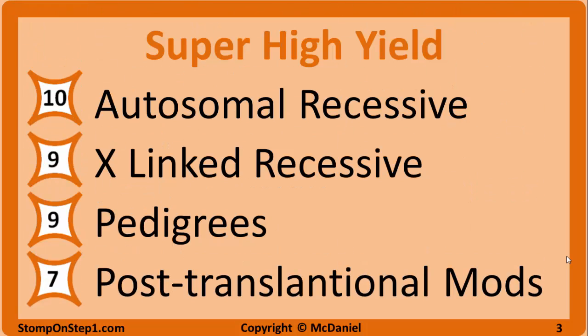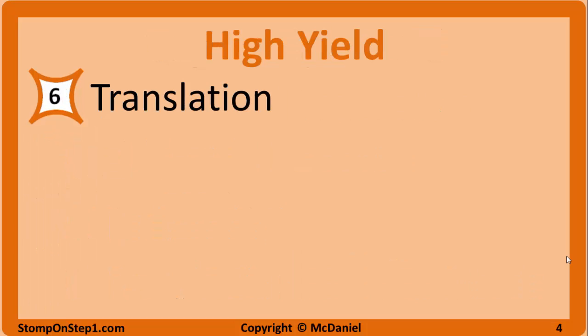With a high yield rating of 7, we have post-translational modifications. You want to know the basics of what a poly-A tail and a 5' cap are, as well as splicing of introns and exons. With a high yield rating of 6, we have translation — just know the very basics of how DNA is turned into RNA. Entry-level bio 101 knowledge would be more than enough to get these questions right; you don't have to dive into the minutiae here.